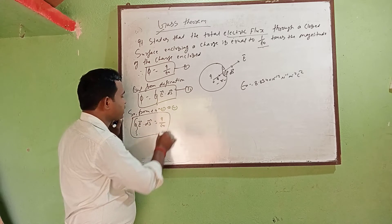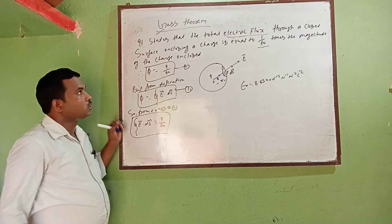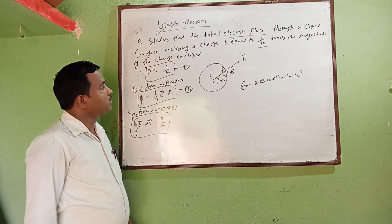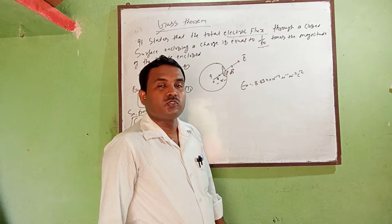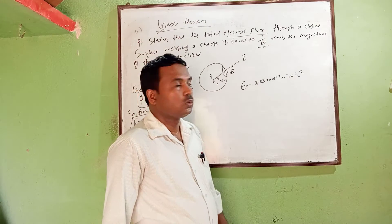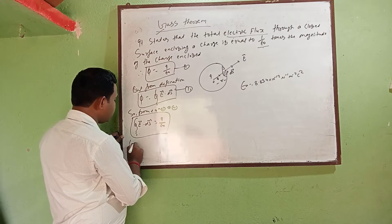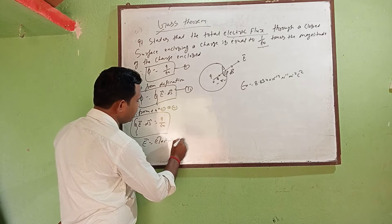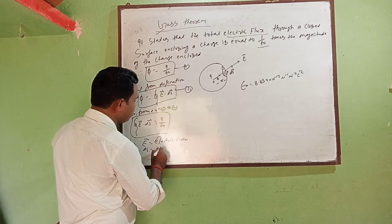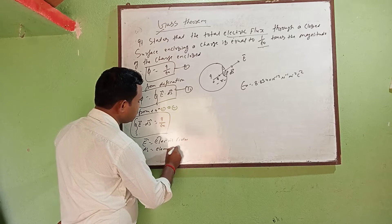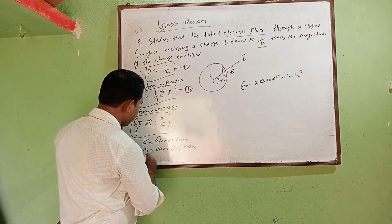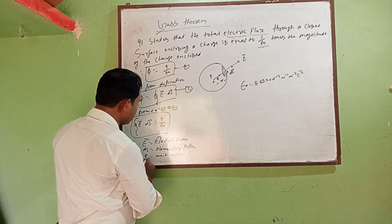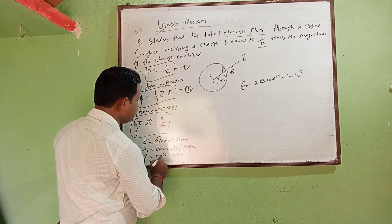This is the formula of Gauss theorem, but we have to prove it. We can prove this using Coulomb's law in electrostatics. Here E is the electric field, DS is the elementary portion, r-hat is the unit vector, and Q is the point charge.